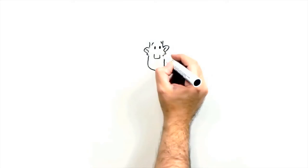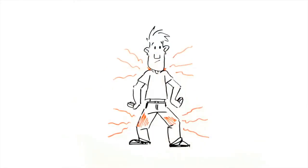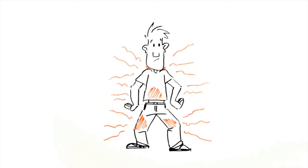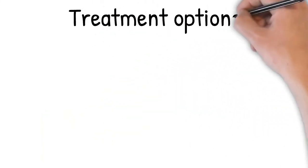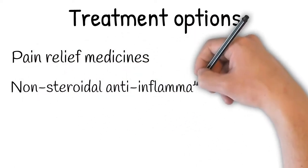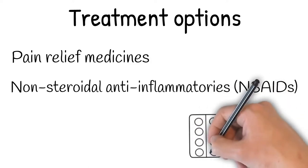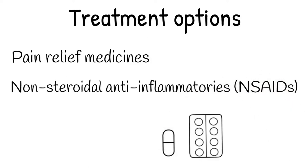Treatment for acute pain will depend on a number of factors such as what is causing your pain, where it is located, how severe it is and your personal preferences. Treatment options typically include pain relief medicines such as paracetamol for mild to moderate pain, non-steroidal anti-inflammatories such as ibuprofen, naproxen or diclofenac which can help reduce inflammation and swelling.